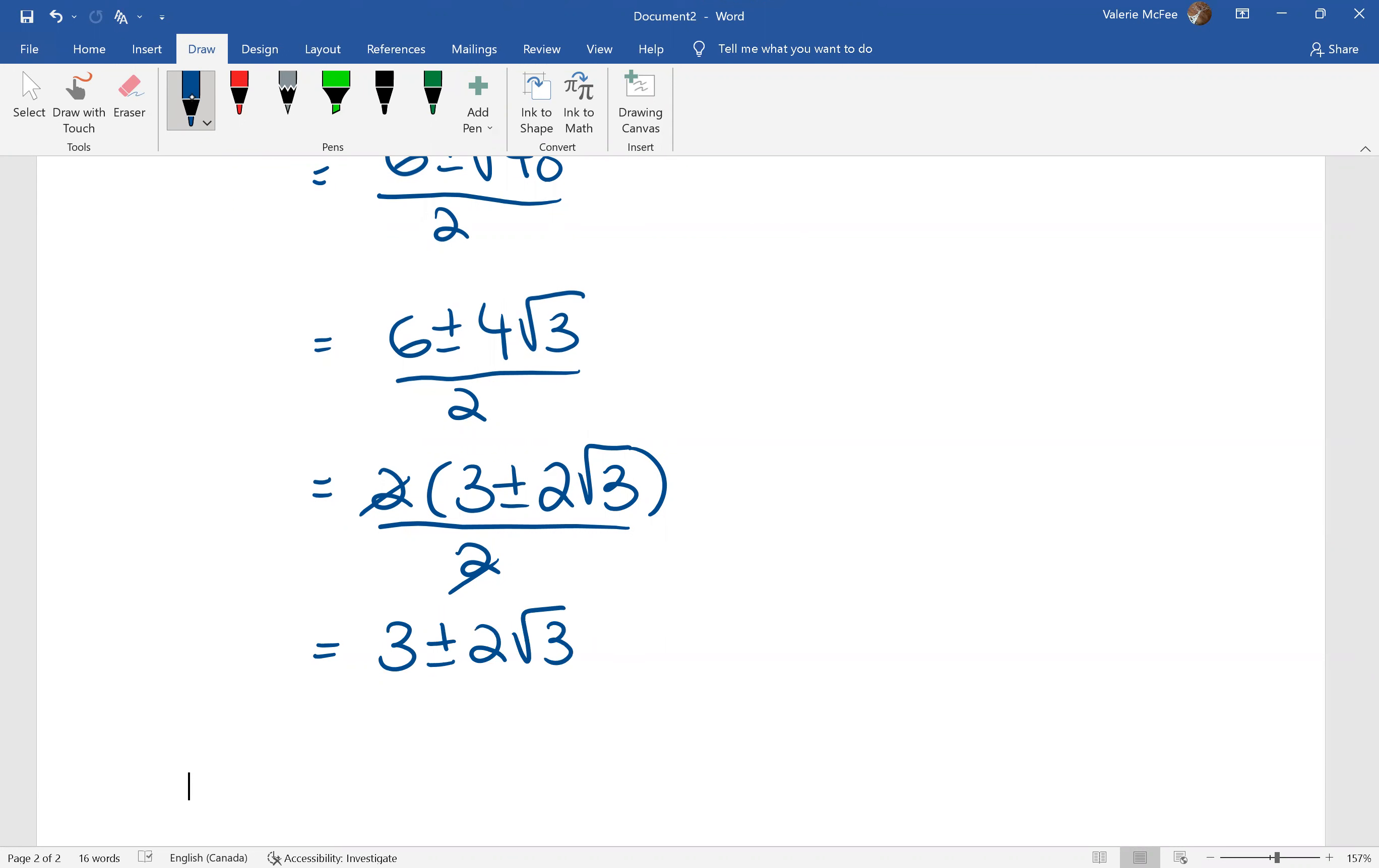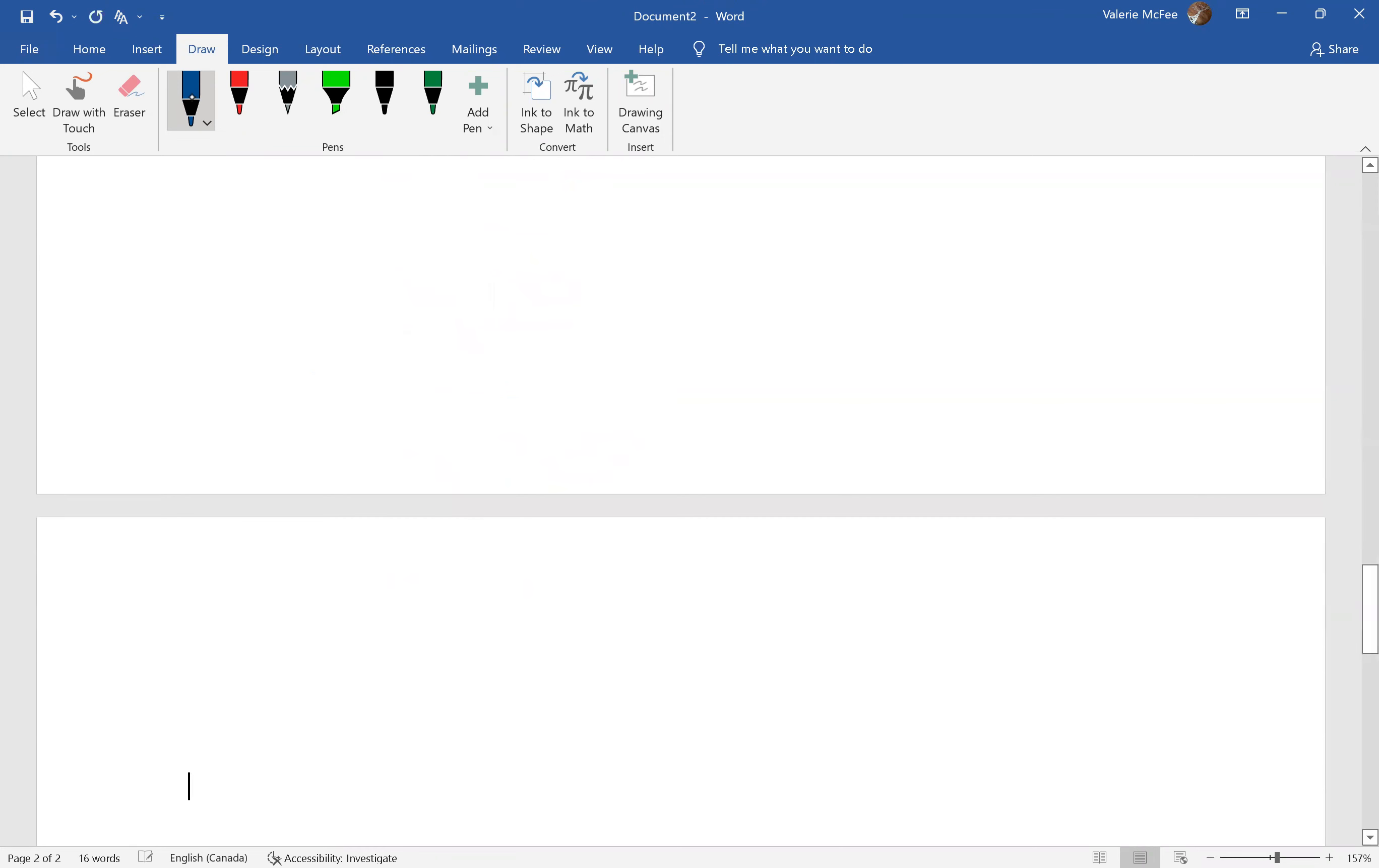The last method to use then is completing the square and I saved a good question for that. Remember, we want to leave X squared negative. We want our equation to equal zero. If you haven't already solved this, please do so now.